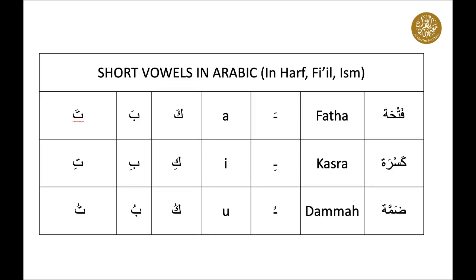Let's start. First, we shall talk about short vowels. There are just six vowels in Arabic: three short vowels and three long vowels. Short vowels in Arabic are used in all three types of words, or in Arabic they are called kalima. The words are harf, fi'il, and ism. In English we have five vowels — a, e, i, o, u — but in Arabic we have six vowels: three short vowels and three long vowels.